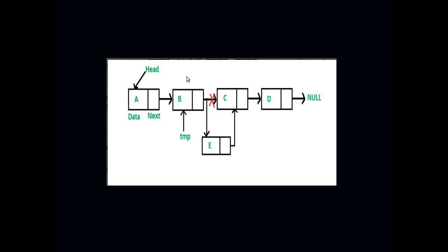In this video we are going to see how to insert a node after a given node. You will be given a landmark from where you need to insert that node. The landmark for this problem is that you have to insert the node at the third position. This is the basic setup we need to make if we want a new node with data 'e' to be inserted into the linked list at position three.